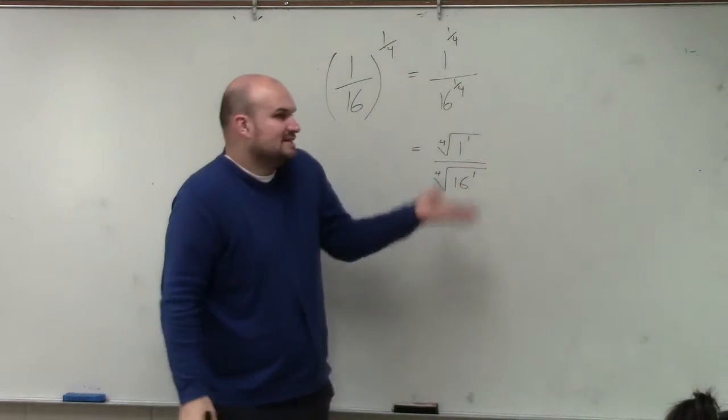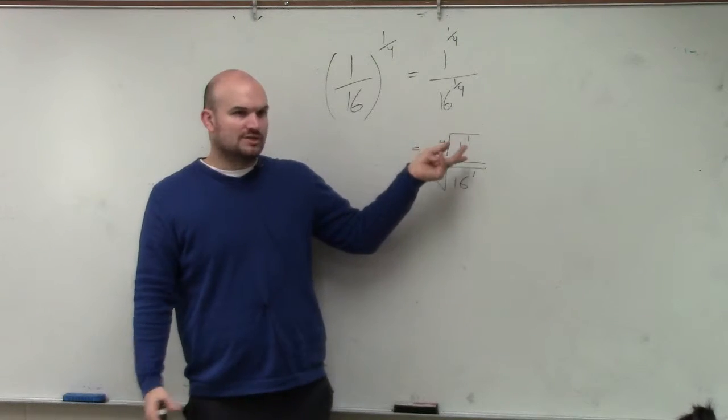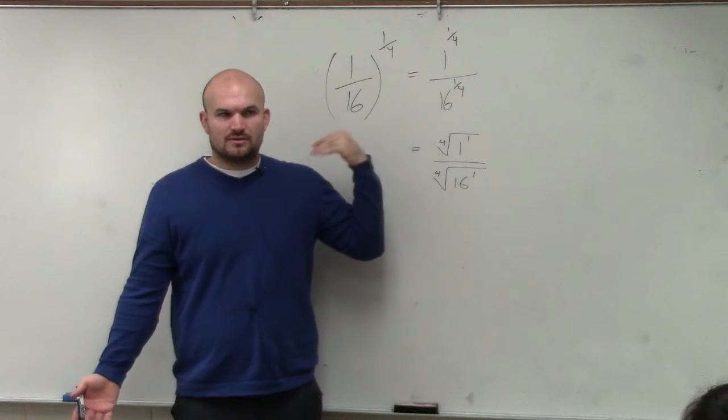So basically, what I'm asking to simplify this is: what number multiplied by itself 4 times gives you 1 to the 1st power, just 1? Which is 1.